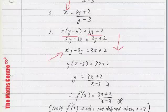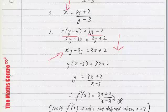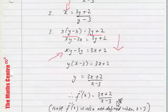So, finally, write down the answer. f inverse x is equal to 3x plus 2 over x minus 3. Note, f inverse x is also not defined for x equals to 3.